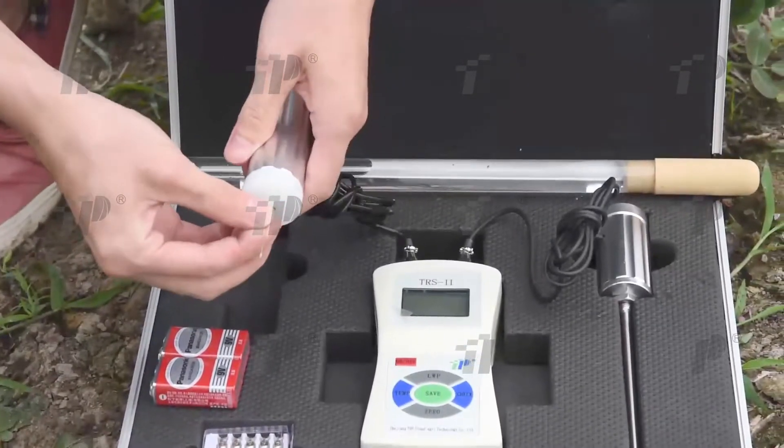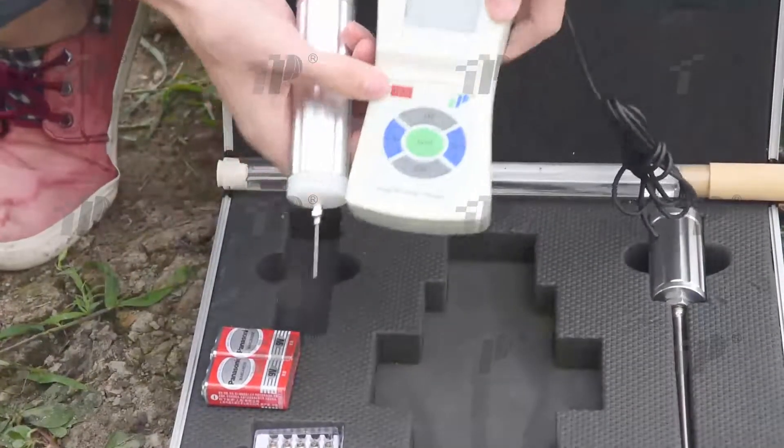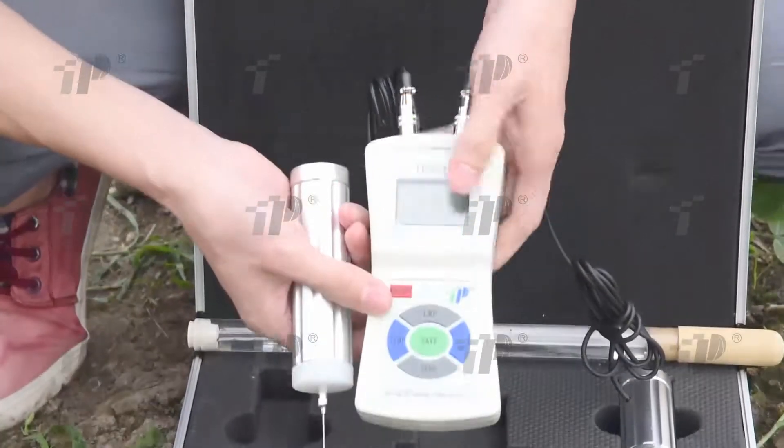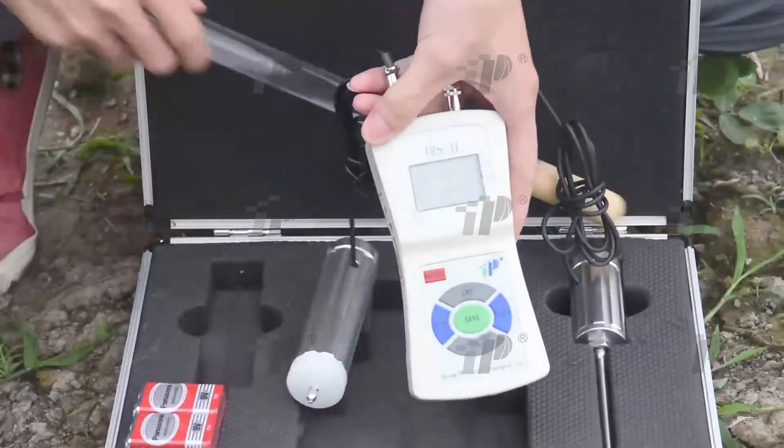Fill 5ml of mud into the hole. Insert the water potential probe into the hole. Make the soil around the plastic rod firm.